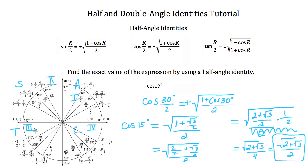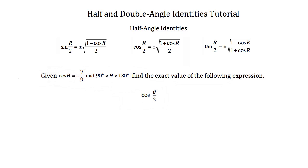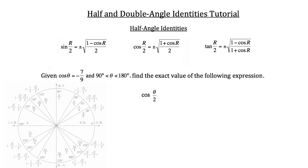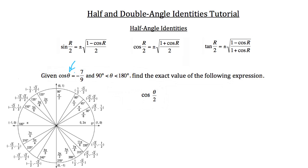Now let's do one more problem using half angle identities. Given that the cosine of theta is equal to negative 7/9 and theta is between 90 and 180 degrees, find the exact value of the cosine of theta over 2. We know that theta lies in quadrant 2, since it's between 90 and 180 degrees, and in quadrant 2 only sine functions are positive.